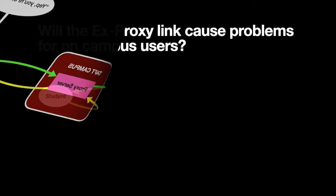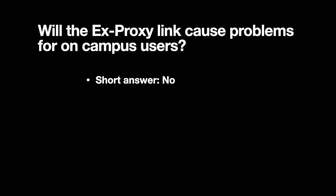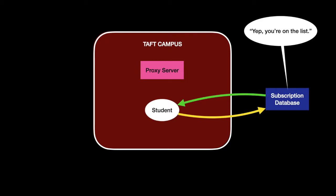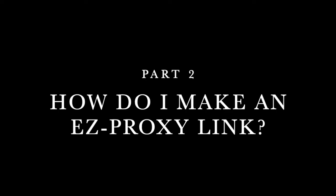But you might ask: will using the EZproxy link cause problems for on-campus users? Short answer: no. Long answer: no. Here's the detailed answer with more diagrams. If the student is trying to use the proxy link on campus, the proxy server says, 'Hey, student, you're already on campus, you don't need me,' and lets the student continue straight on to the database and gets out of the way. The database sees the student is on campus, says, 'Yep, you're on the list,' and passes things right back. It's an excellent system.